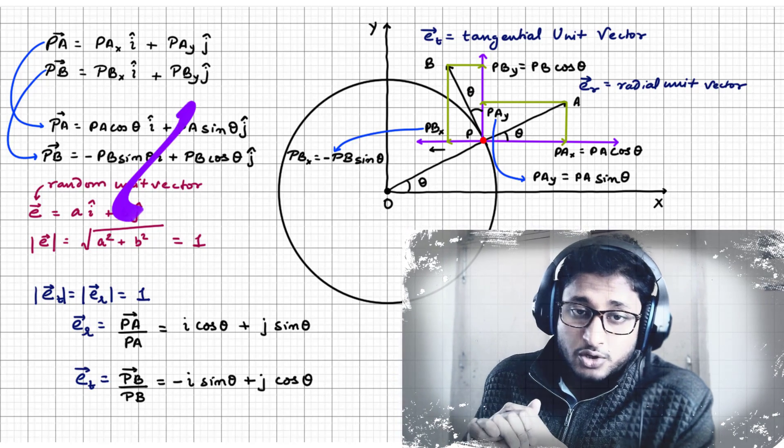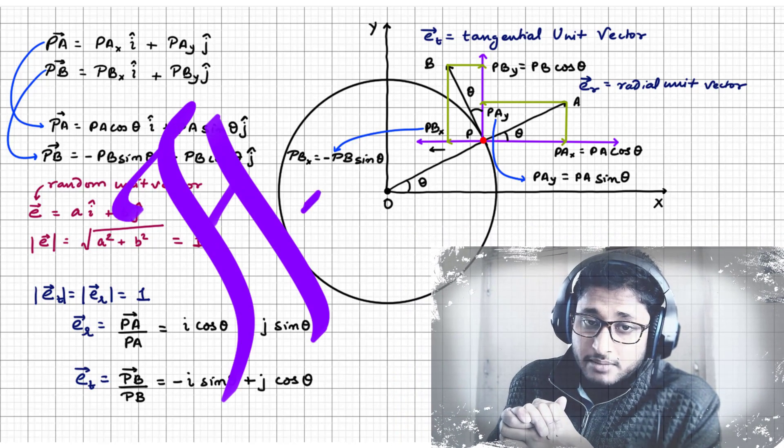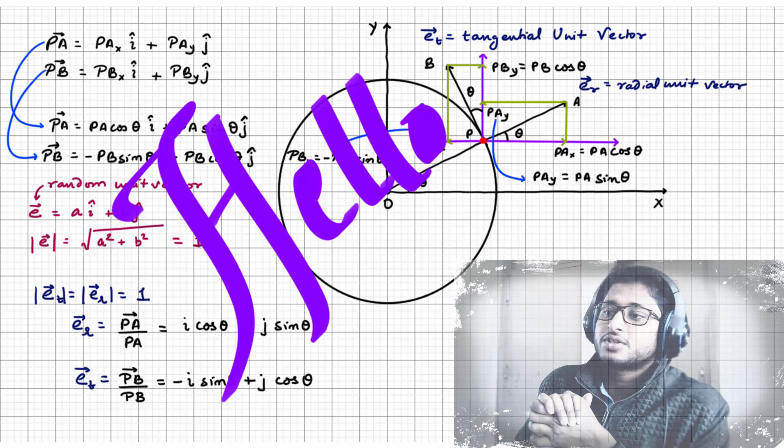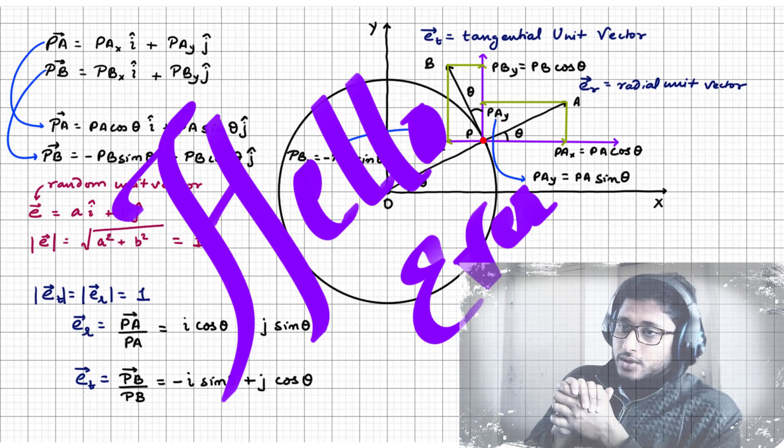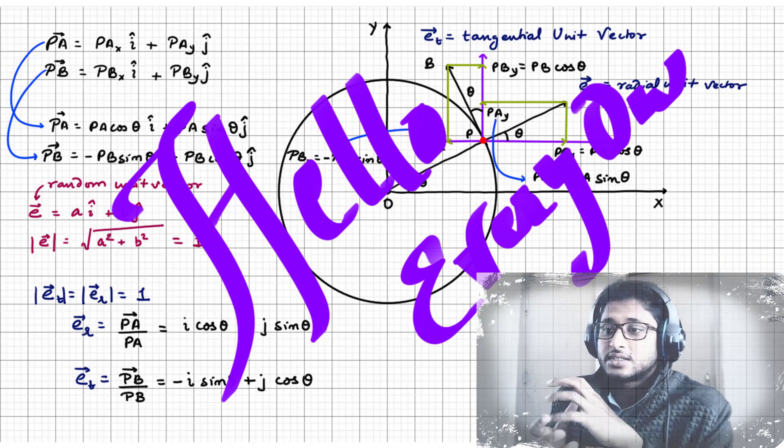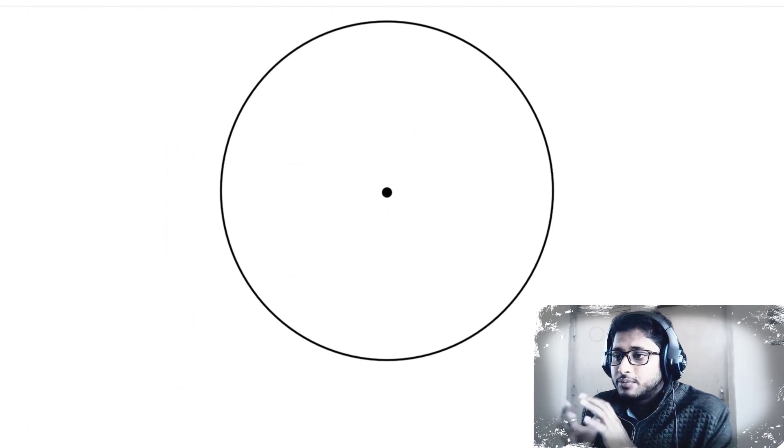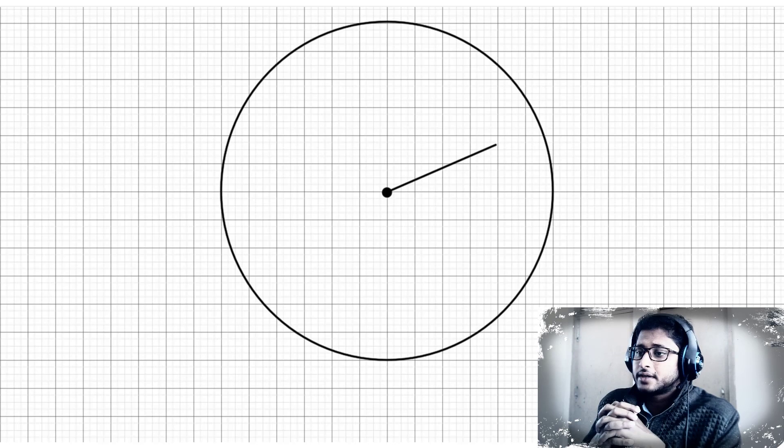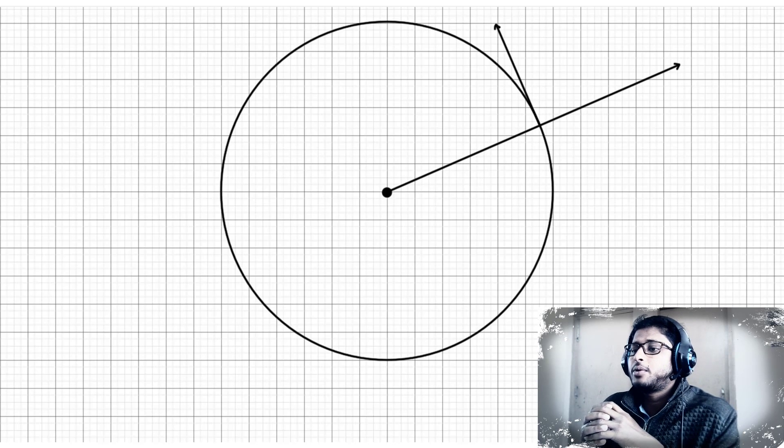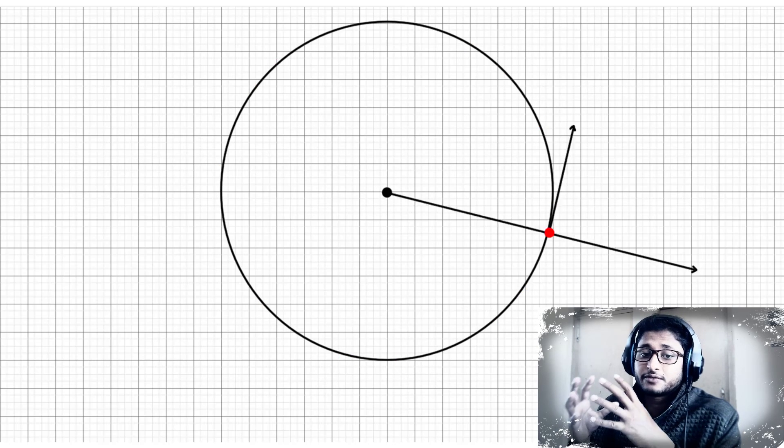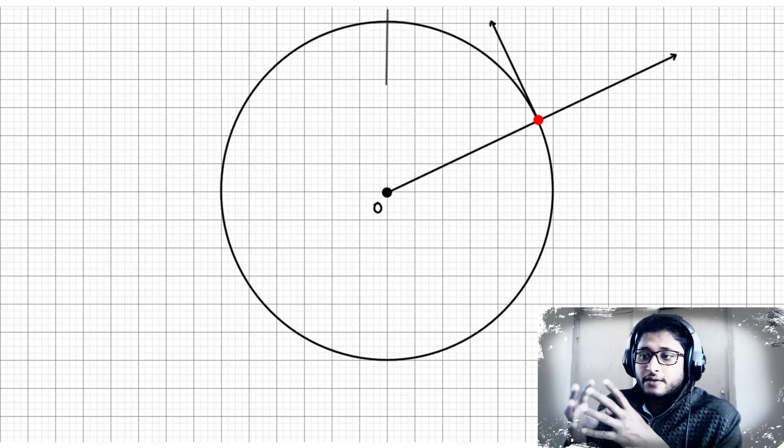Bismillah ar-Rahman ar-Rahim, assalamu alaikum everyone. This is Physics Pen back with another video. We are going to start this video from where we left the previous one. To add a little bit of context, we will do a recap of what we have already done. In the previous video, we were talking about unit vectors along the radius and the tangent of a particle executing circular motion about a fixed point O.